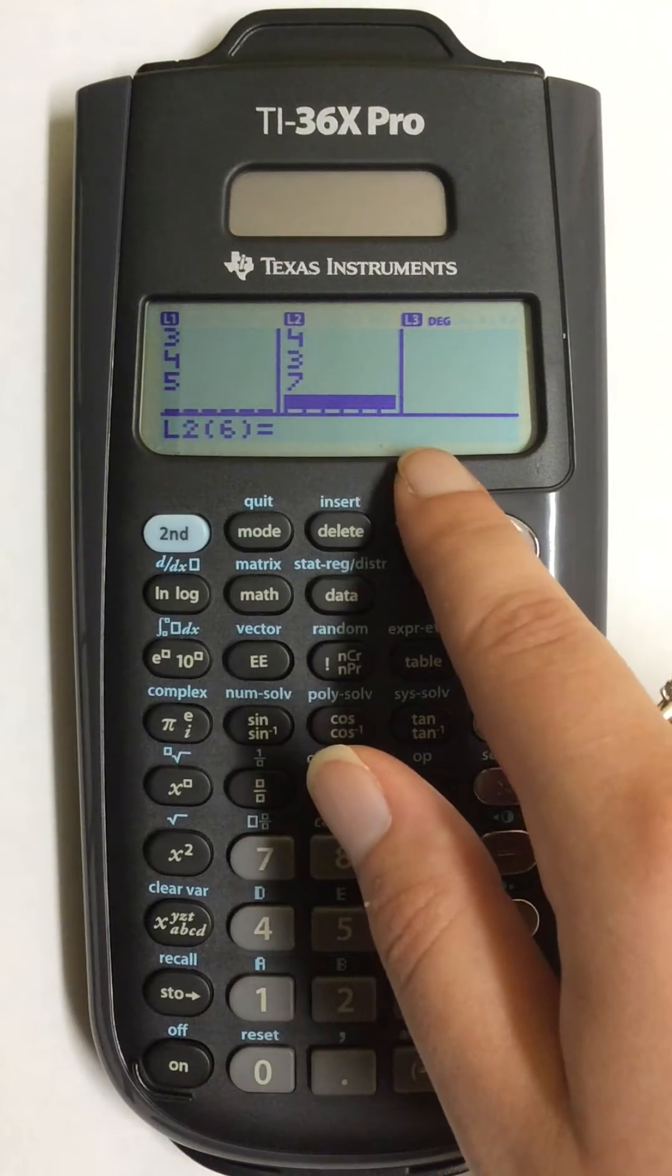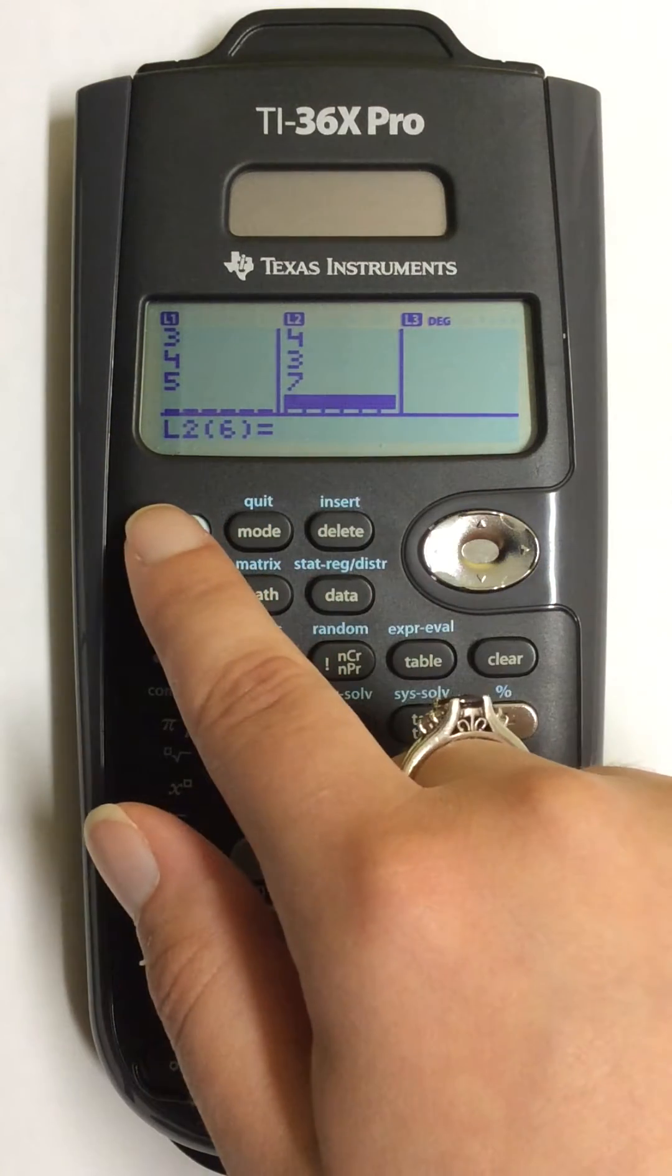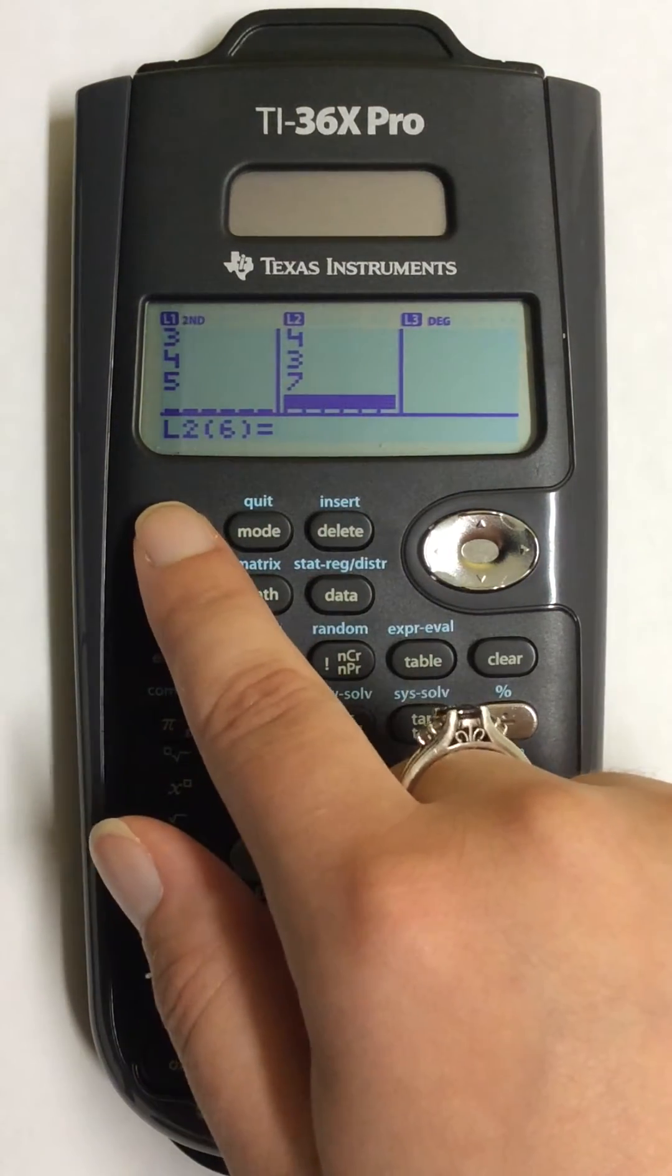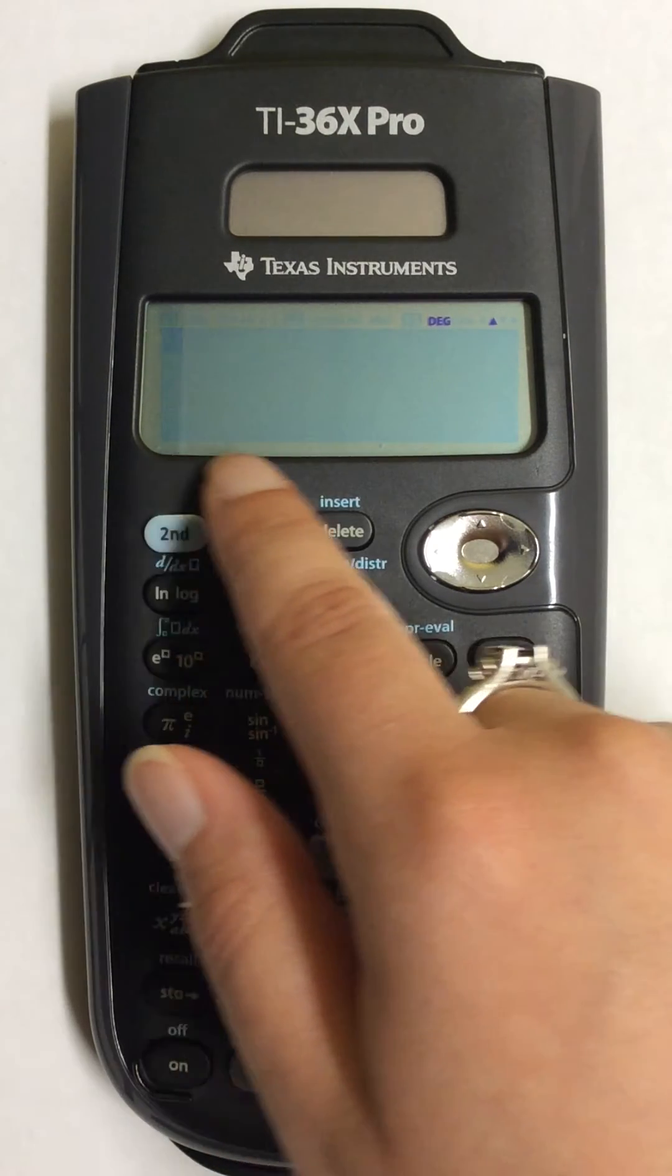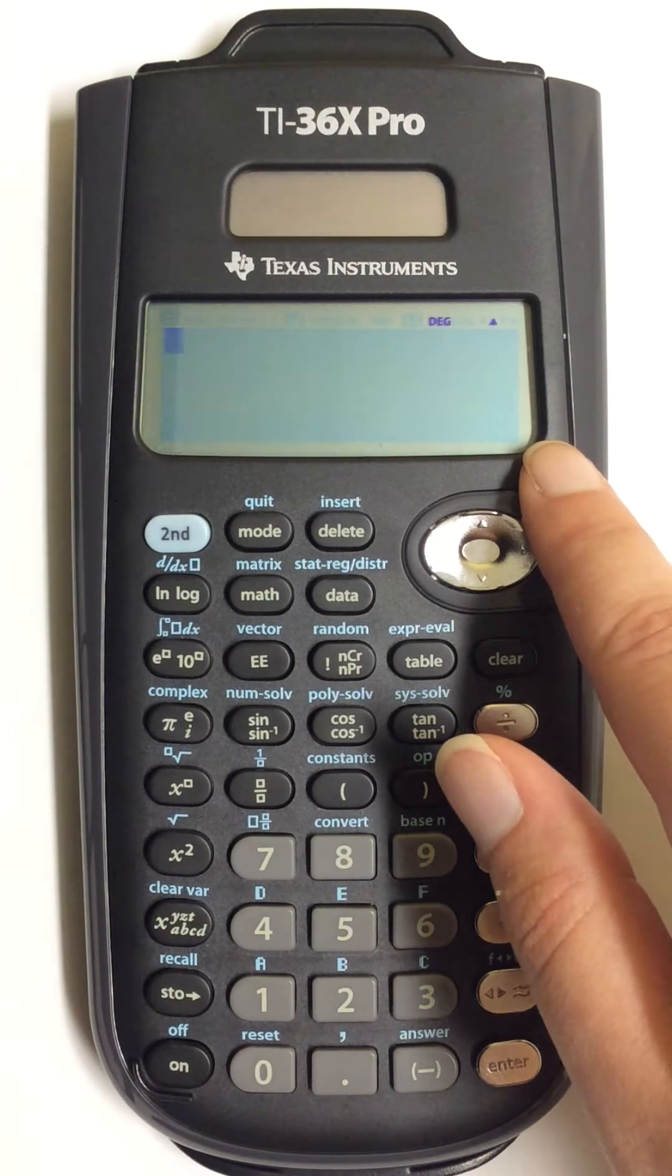To save your numbers, press the second button and then quit. This will clear the screen and save all your data.